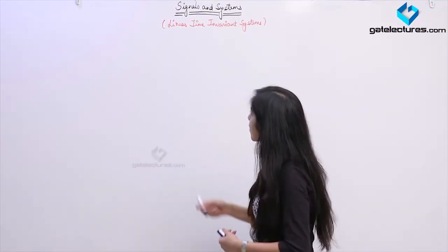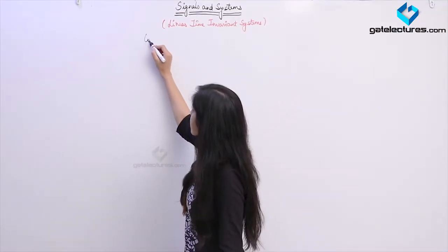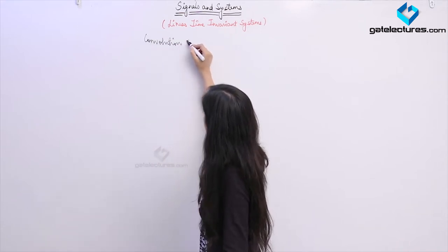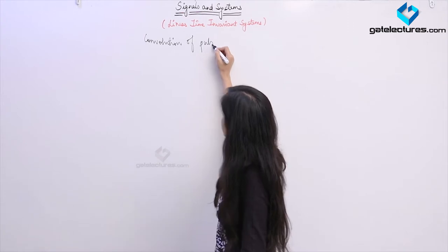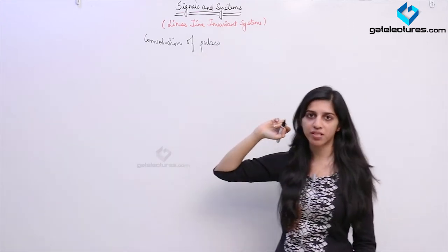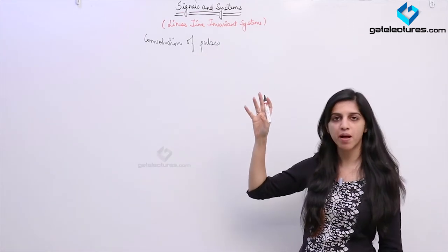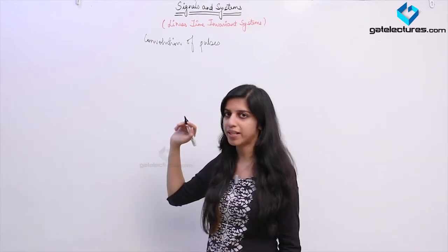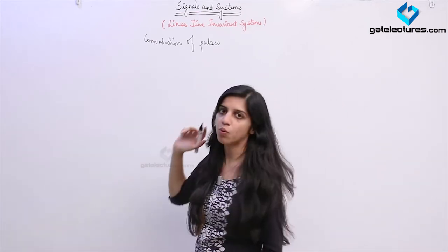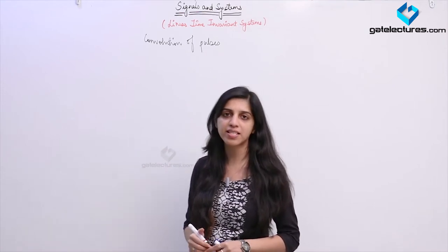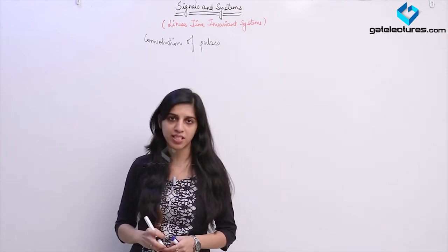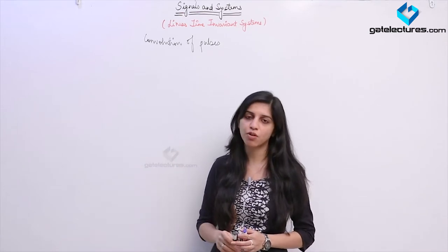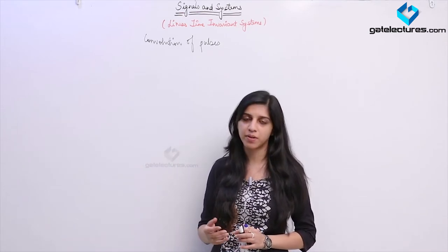So now we look at convolution of two pulses. What is a pulse? A pulse consists of unit step functions — a rising unit step and a falling unit step — a pulse of finite duration. When convolving two pulses of the same width and same duration, you are going to obtain a triangular pulse.